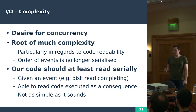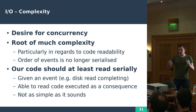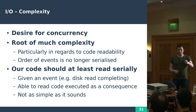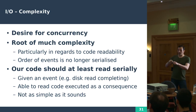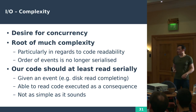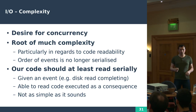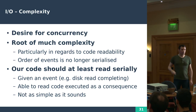We have a desire for concurrency and utilization — we want our CPUs at 100% all the time for the best performance. The problem is this is the root of much, if not all, of the complexity you'll encounter when writing concurrent asynchronous code. In particular regarding code readability, you can really end up with some horrible-looking code. The order of events in your program are no longer serialized — you can no longer read the code and expect function calls to happen one after another if there's an asynchronous operation in between. We want our code to at least read serially.